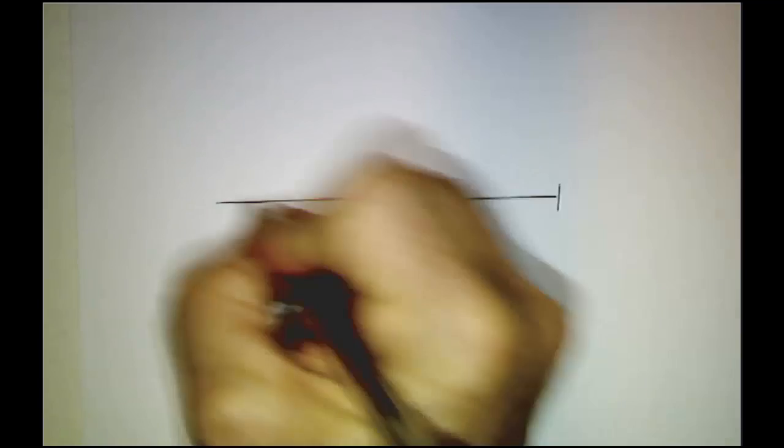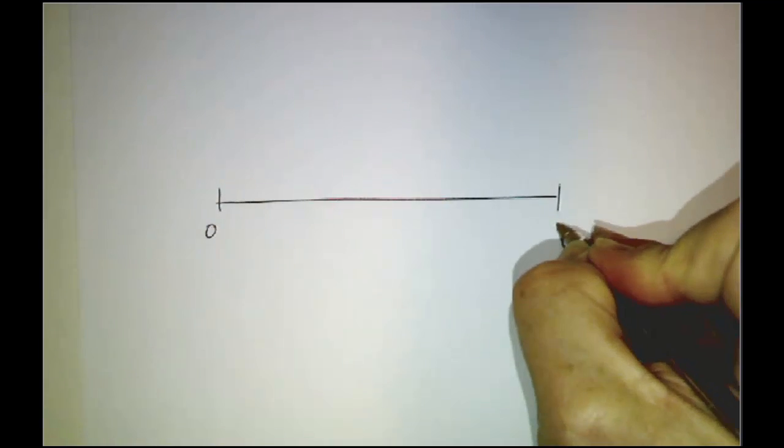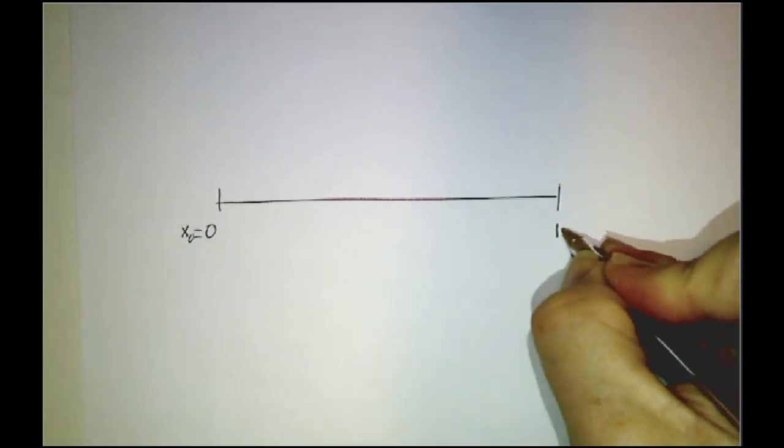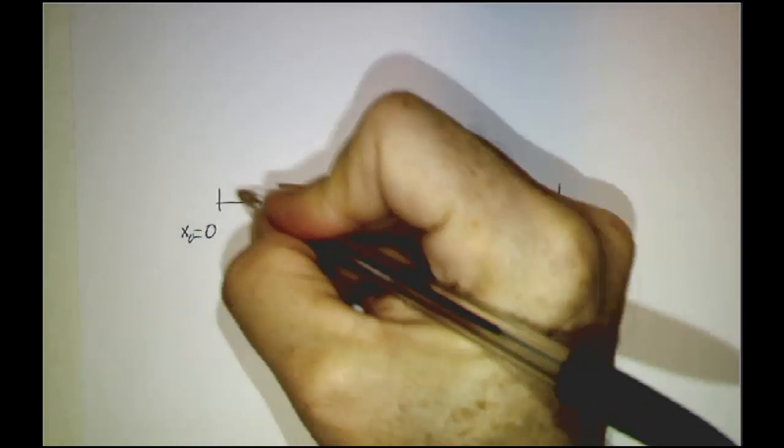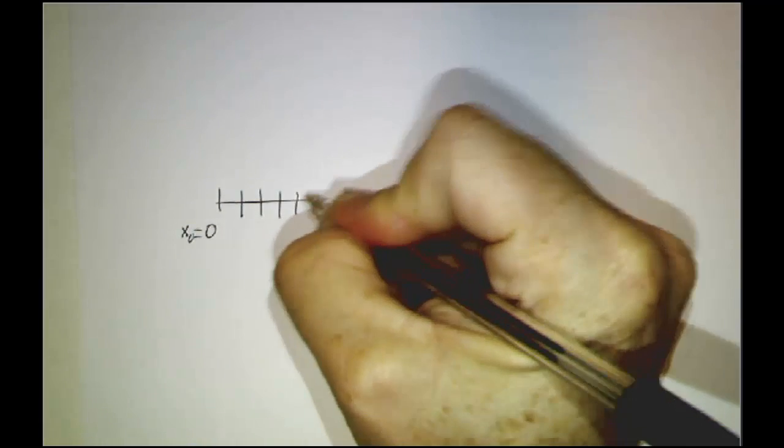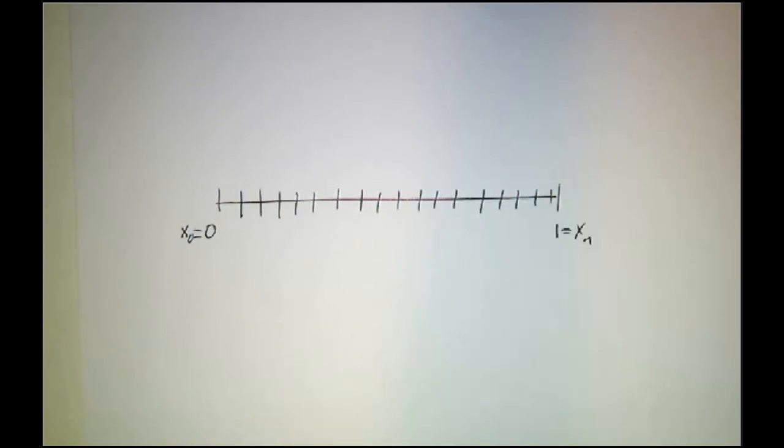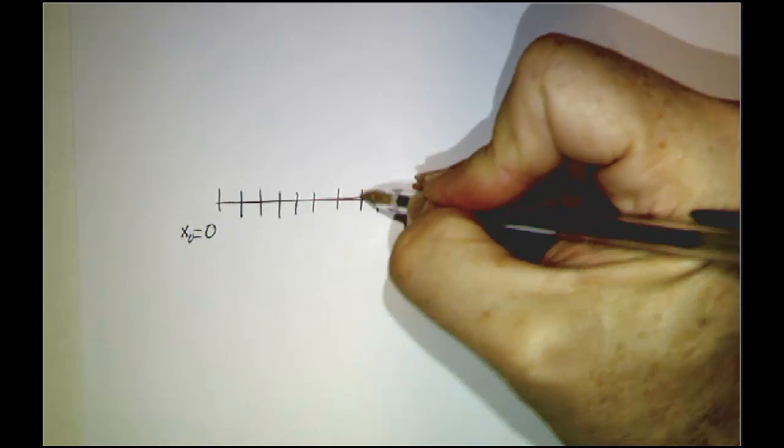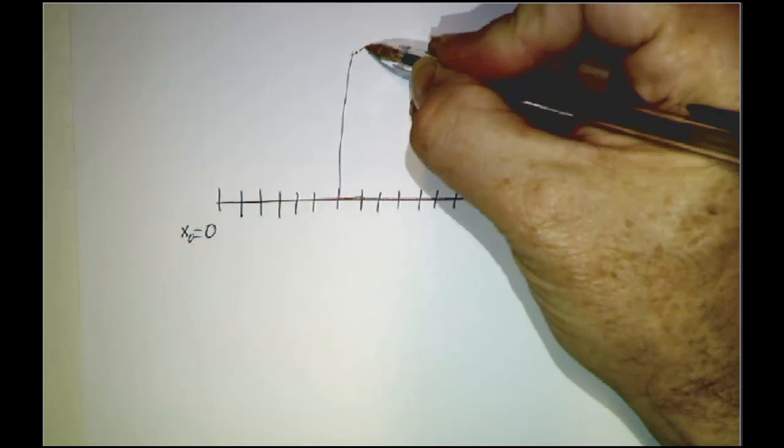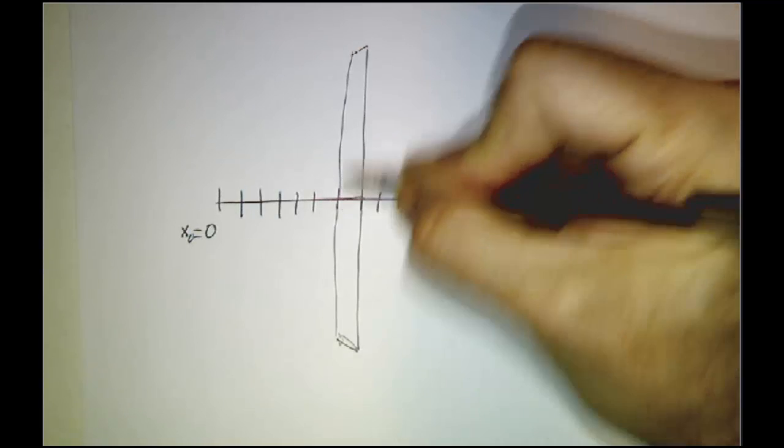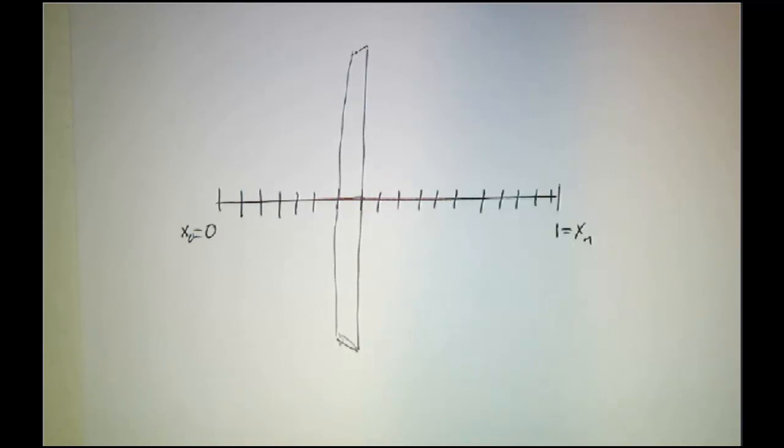So if you think about it this way, here we take x goes from 0 to 1. x0 is 0, xn is 1. We slice the interval from 0 to 1 into n pieces. And then associated with each piece is the slice of meat, or the slice of cone, or the slice of whatever it is that you're talking about.